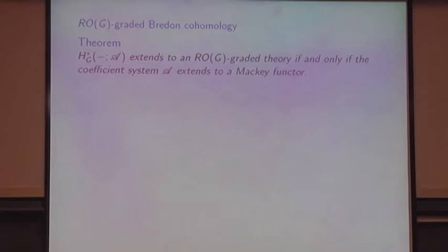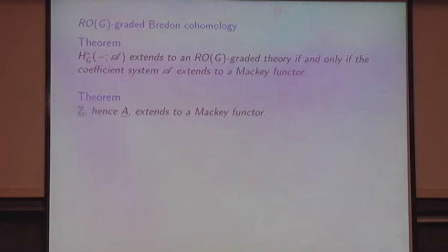I still haven't finished the proof of the Conner conjecture because I haven't yet explained how you get an ROG-graded cohomology theory. For that we use two theorems: one is that a Z-graded cohomology extends to an ROG-graded theory if and only if the coefficient system extends to a Mackey functor, and second, the constant coefficient systems do extend to Mackey functors. And remember we're working with a compact Lie group — we're not in the realm of algebra here. So I need to tell you what a Mackey functor is to give content to this theorem.